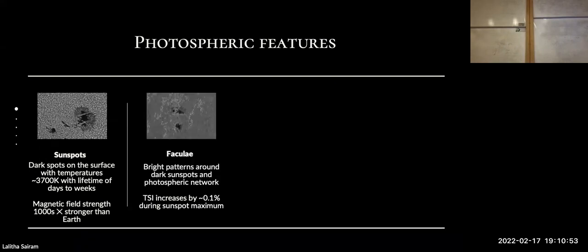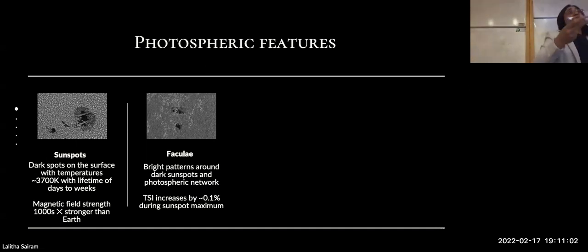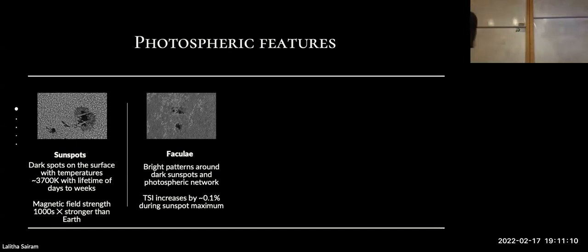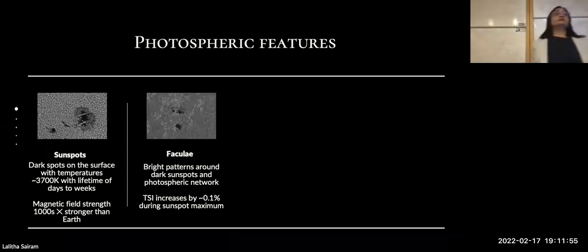The next most prominent feature is faculae — plural of facula, meaning torch in Latin. Faculae are a hydrogen network of gas floating around the surface of the Sun, very close to spots. Because of the name 'torch,' these are brighter regions that contribute to the total irradiance measured from the Sun. When the Sun is dominated by spots, the total irradiance is much lower; when dominated by faculae, the irradiance goes up.